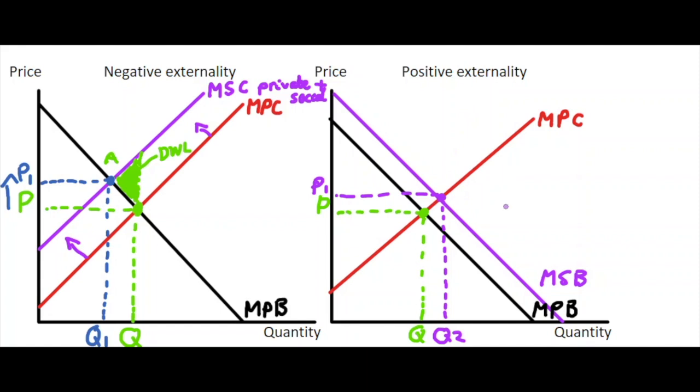If the government doesn't subsidize this product that exhibits social benefits, it causes, just like in our previous example, a deadweight loss. We can represent the deadweight loss by bringing our vertical line upwards and indicating it with a triangle shaded in green. This is a deadweight loss to society if the positive externality is not taken into account, and we won't reach our socially optimum efficient outcome.